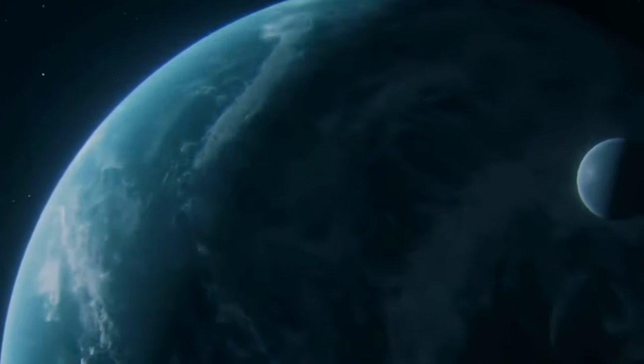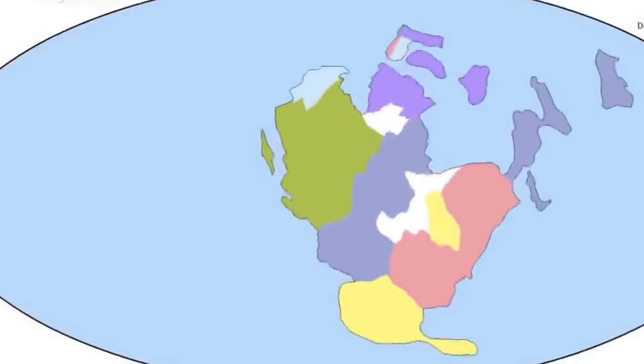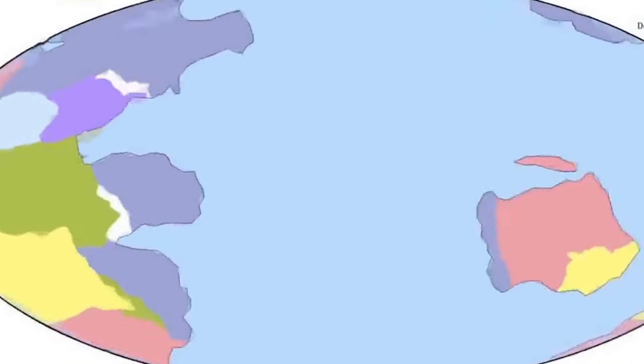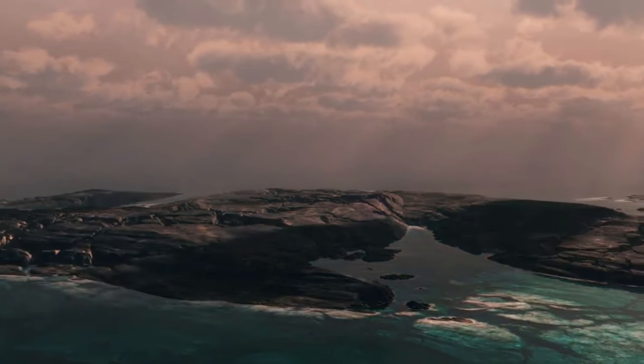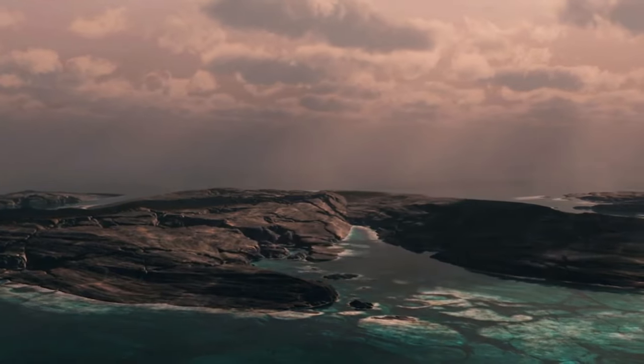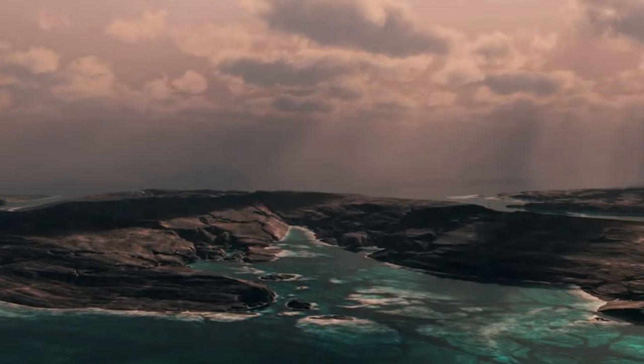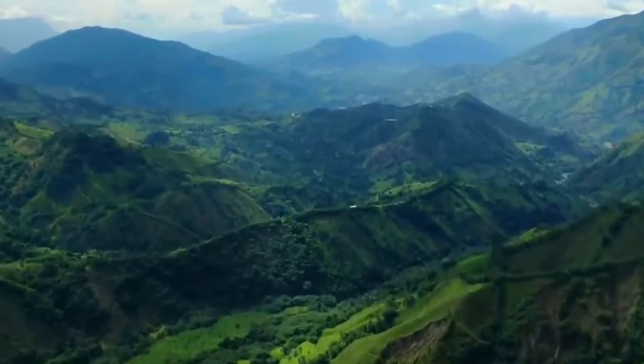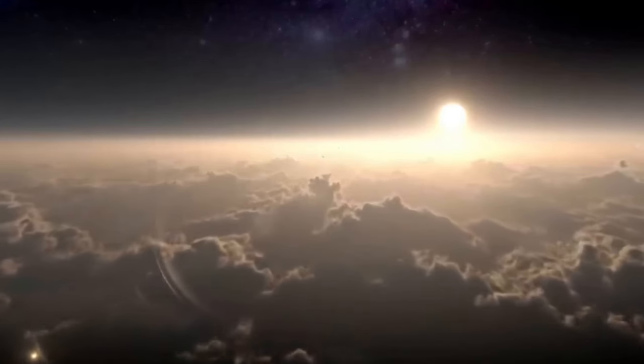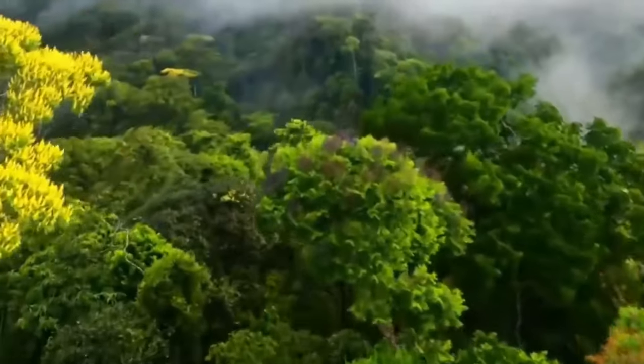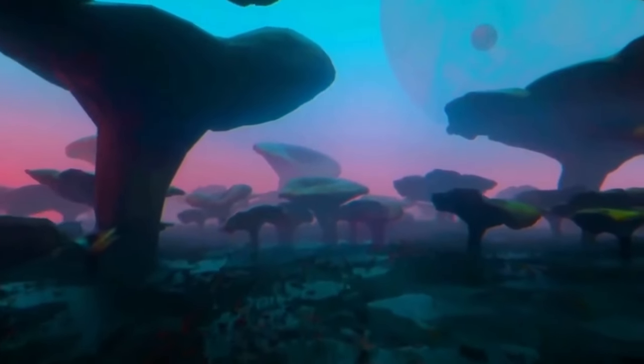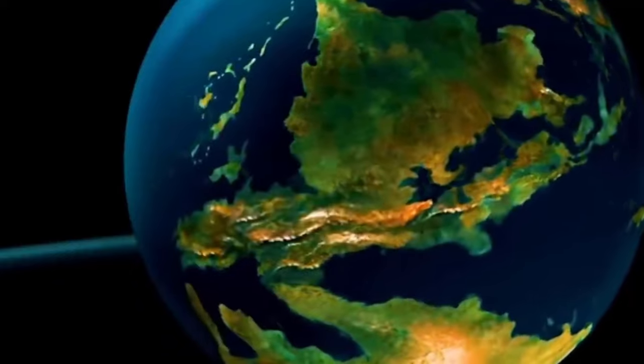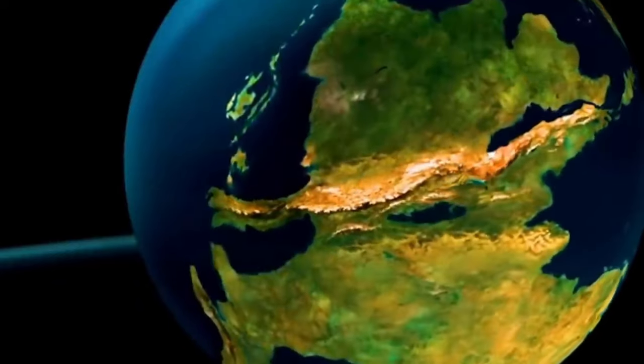The emergence of life on Earth is one of the most significant milestones in our planet's history. Life is believed to have appeared sometime during the Archean, with evidence suggesting microbial life existed as early as 3.5 billion years ago. This emergence of life profoundly transformed Earth's atmosphere and geology. Photosynthetic organisms began converting carbon dioxide into oxygen, gradually leading to an oxygen-rich atmosphere and paving the way for more complex life forms.